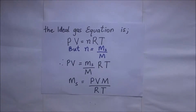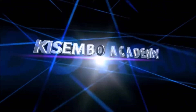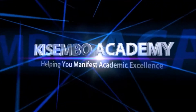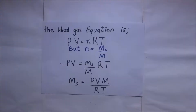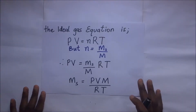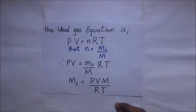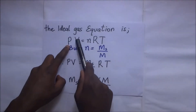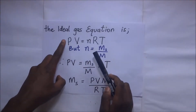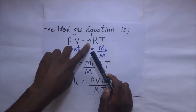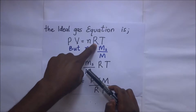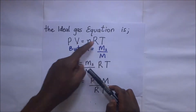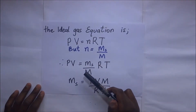In this session, we derive the equations for mass and density of an ideal gas using the ideal gas equation. We'll be manipulating it to get the parameters we want. The ideal gas equation is PV = nRT, where P is pressure, V is volume, n is the number of moles, R is the molar gas constant, and T is the absolute temperature.